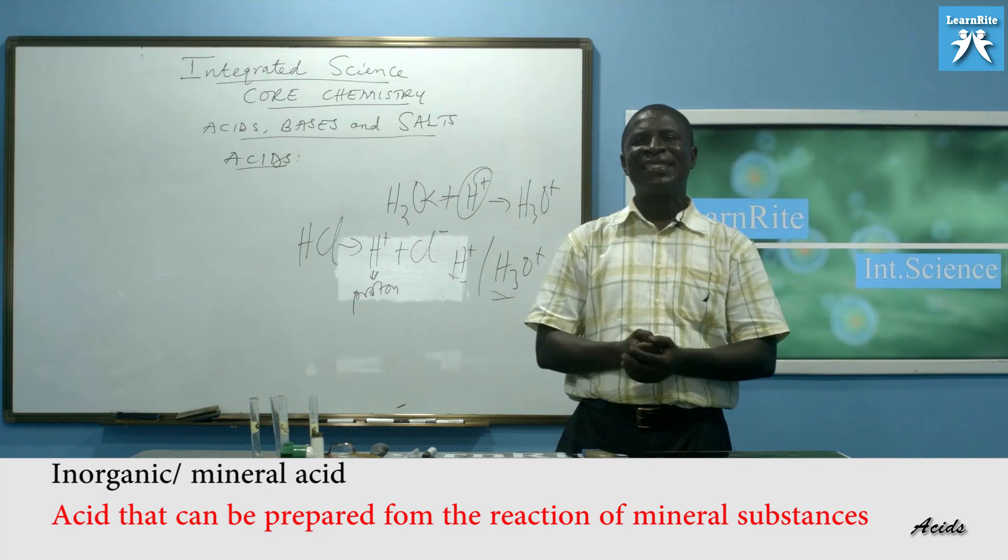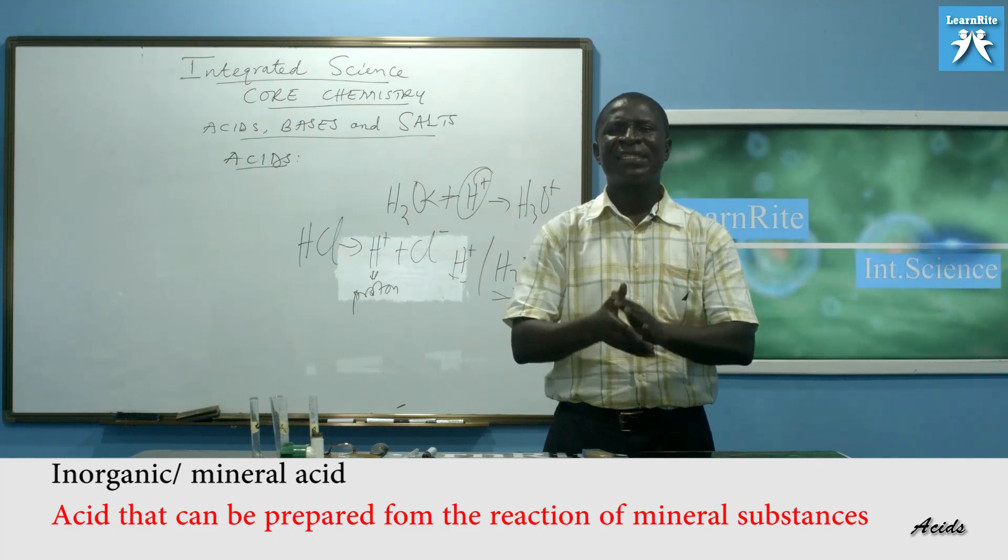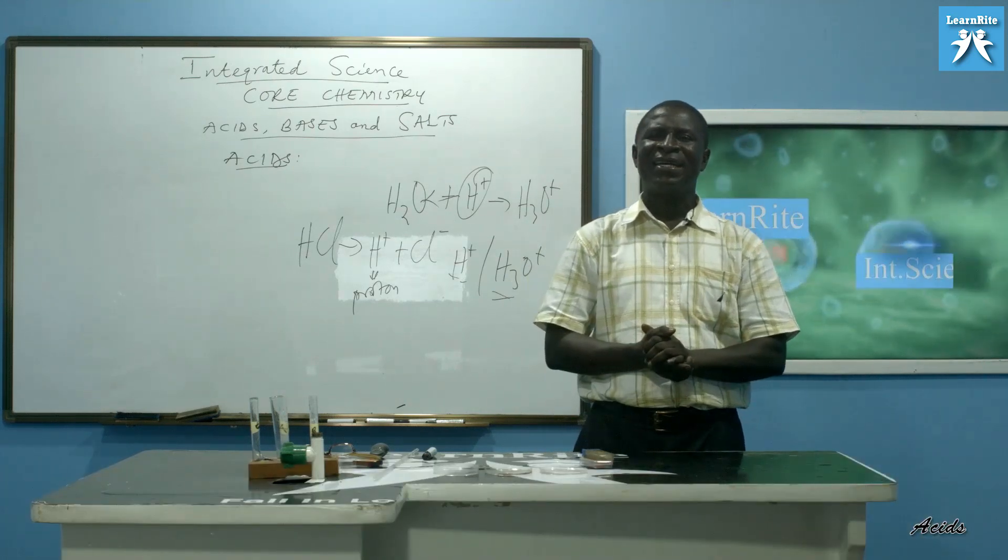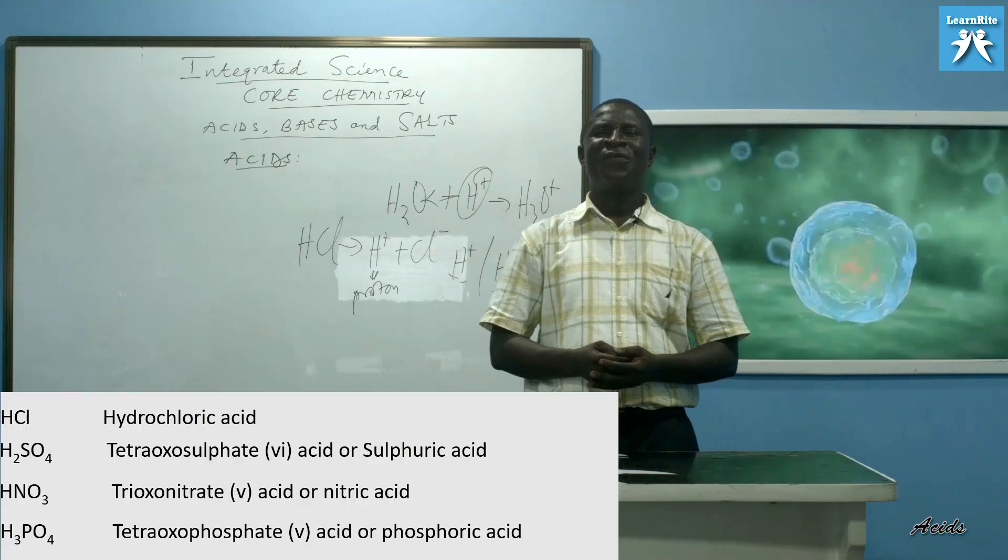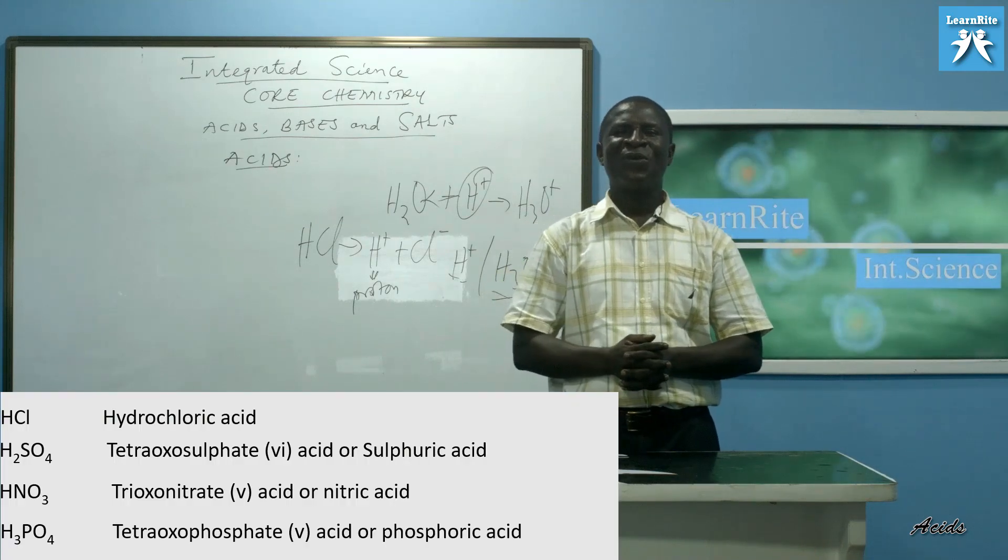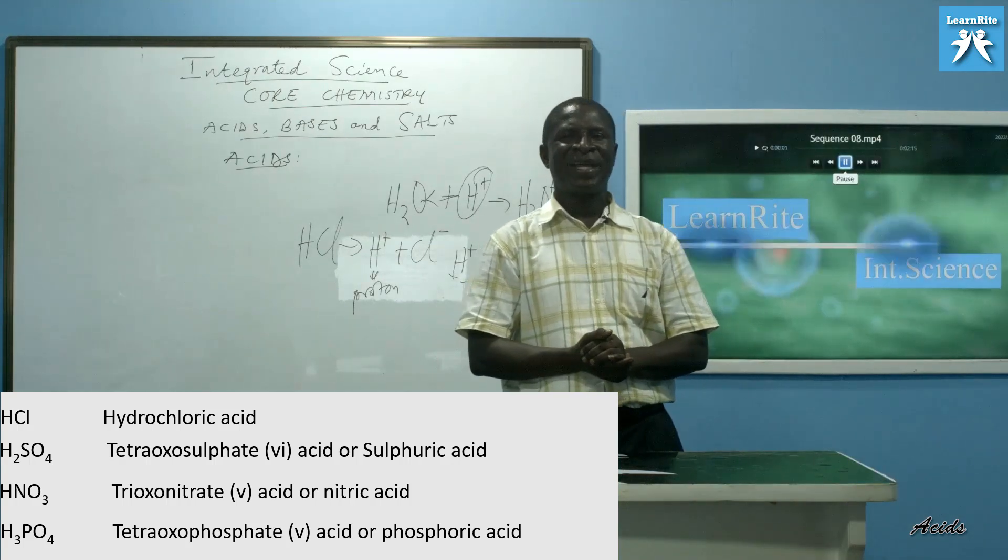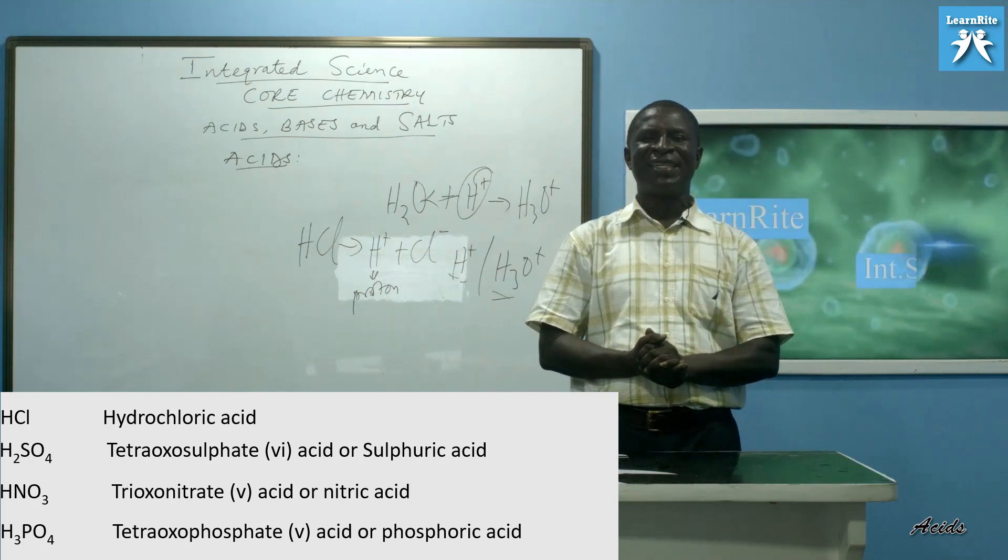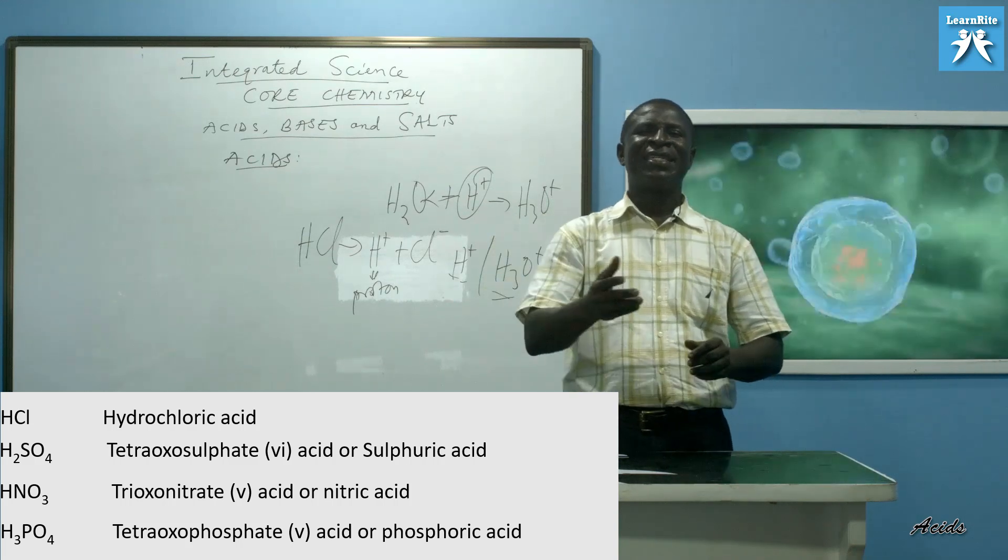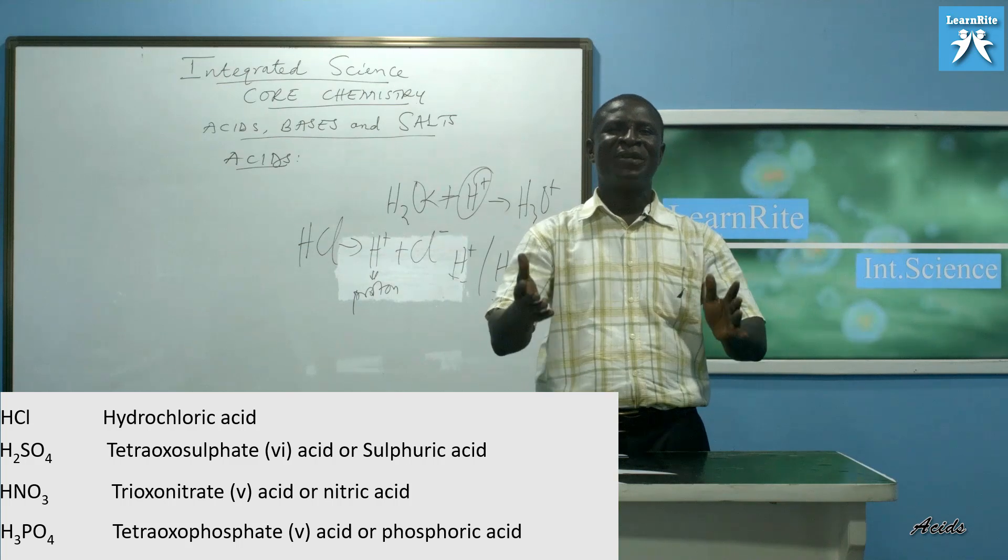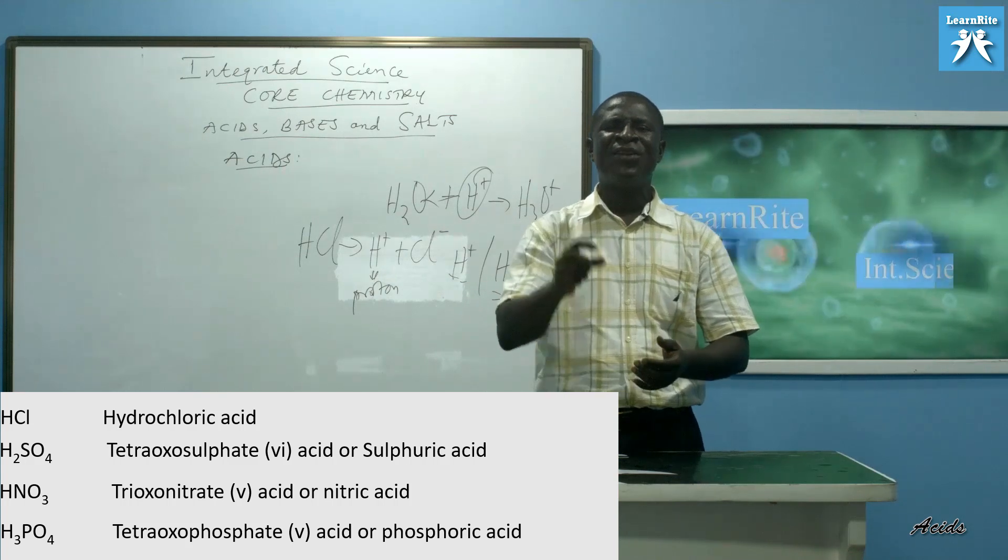They are acids that can be prepared from the reactions of mineral substances. The common ones are HCl, hydrochloric acid, H2SO4, tetraoxosulfate 6 acid, which is commonly called sulfuric acid. We have HNO3, trioxonitrate 5 acid, simply called nitric acid. Then we have H3PO4, tetraoxophosphate 5 acid, simply called phosphoric acid. These are examples of inorganic acids.